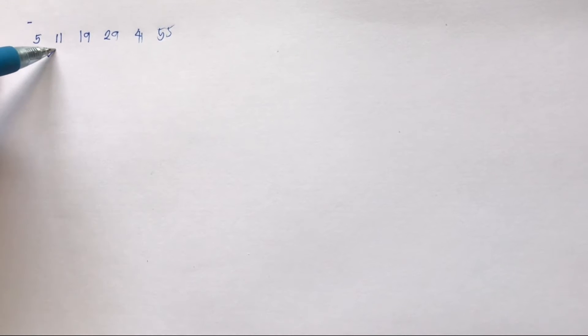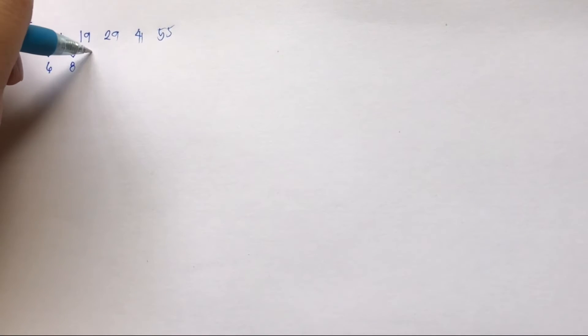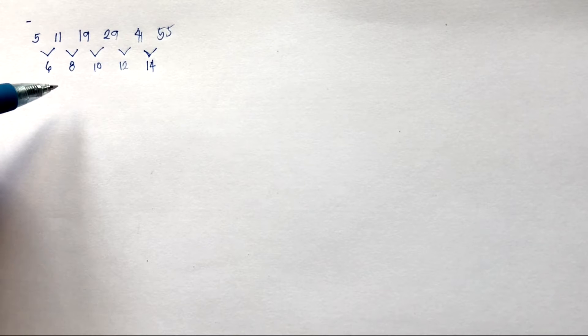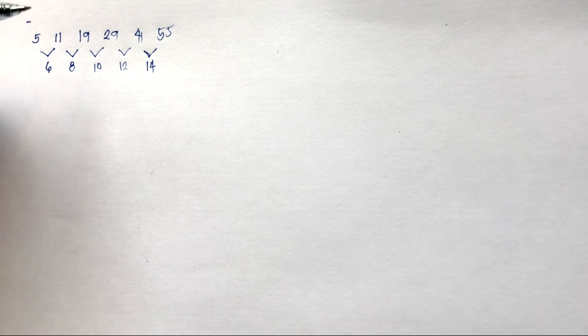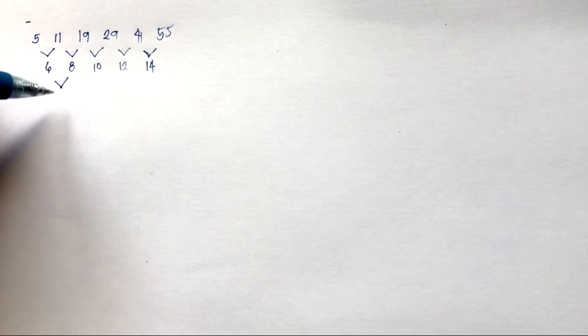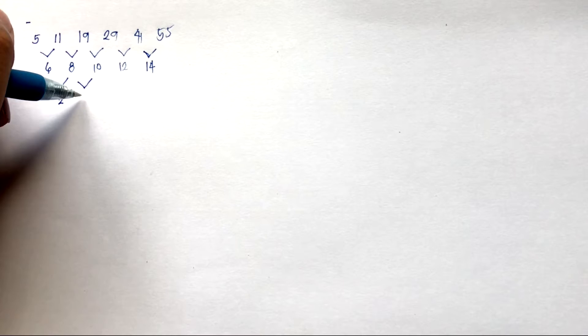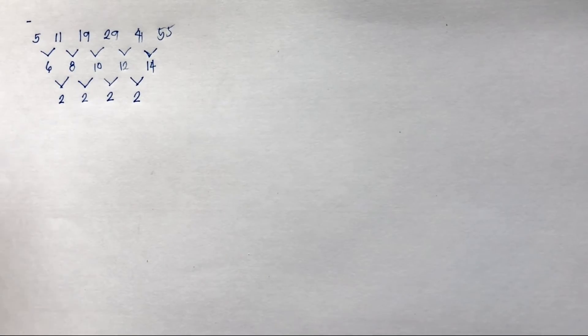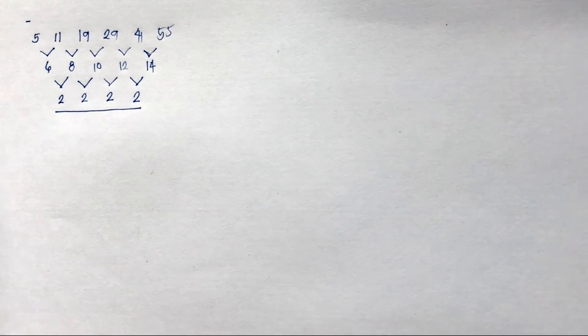Let's find the first-layer differences: from 5 to 11 is 6, from 11 to 19 is 8, from 19 to 29 is 10, from 29 to 41 is 12, and from 41 to 55 is 14. As you can see, this is not a linear or first degree sequence. Let's proceed to the second layer and see if there is a constant number: 6 to 8 is 2, 8 to 10 is 2, 10 to 12 is 2, and 12 to 14 is 2. It is indeed a second degree sequence because the second layer numbers are equal and constant.